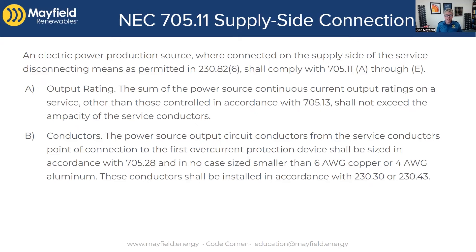A lot of times supply side connections are done on commercial or larger systems, but there are cases where you do a supply side connection on a residential application. So having this rule — knowing you need 6 AWG copper from the point of connection to the first overcurrent device, regardless of size — is helpful. In reality, even if it's a small system with only a 30 or 40 amp overcurrent device, yes you're oversizing wires, but it's a short run, so it's not a huge cost implication. We're going to look at that here in a minute.